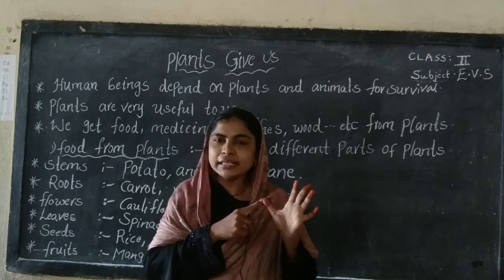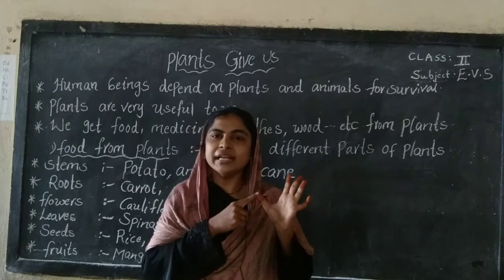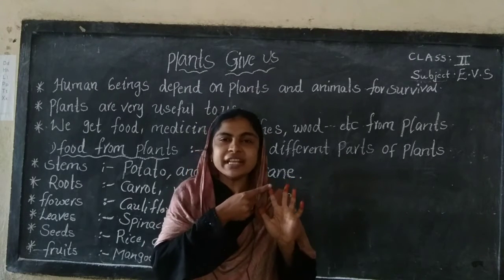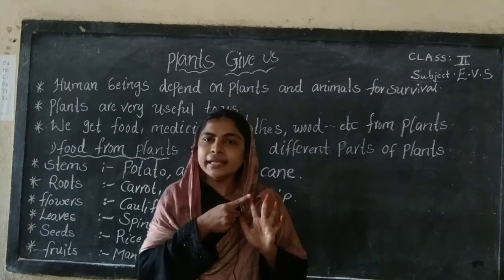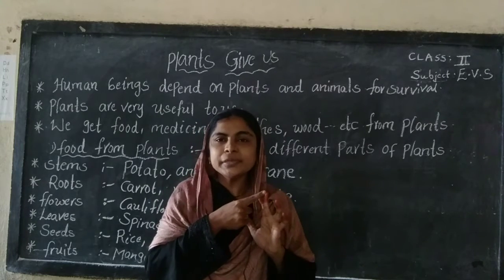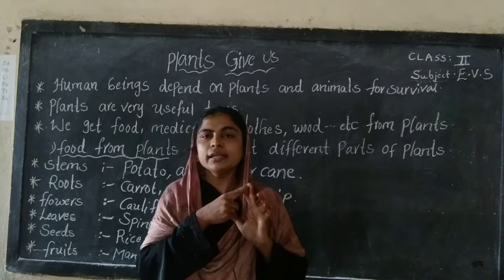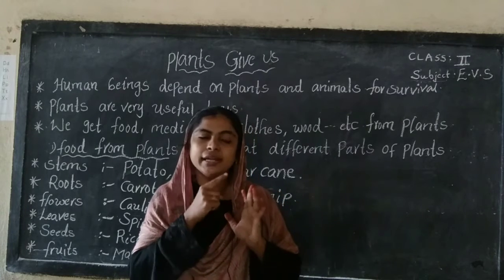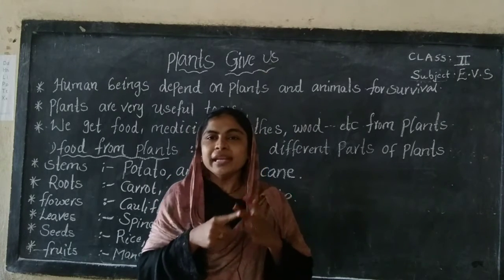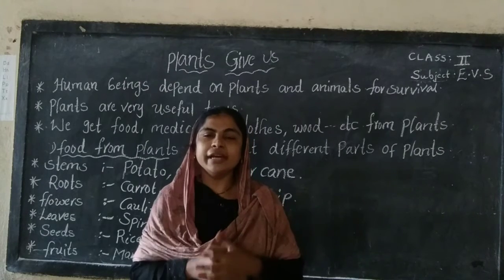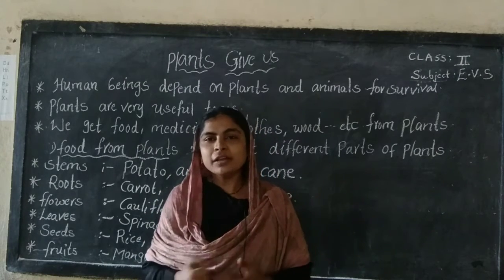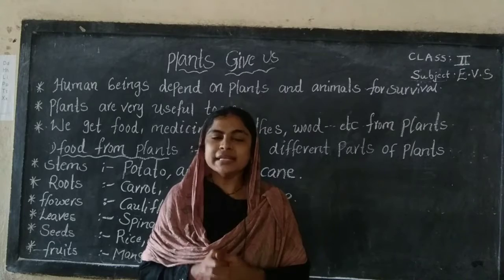Trees, for example: banyan tree and mango tree. Shrubs, for example: rose and tulasi plant. Herbs, for example: mint and coriander. Climbers, for example: money plant and grapevine. Creepers, for example: watermelon and muskmelon.